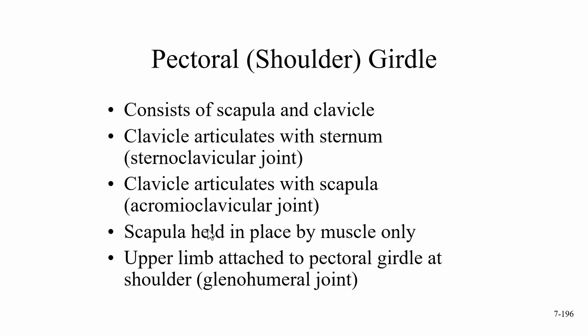The upper limb is attached to the pectoral girdle at the shoulder, or glenohumeral joint.